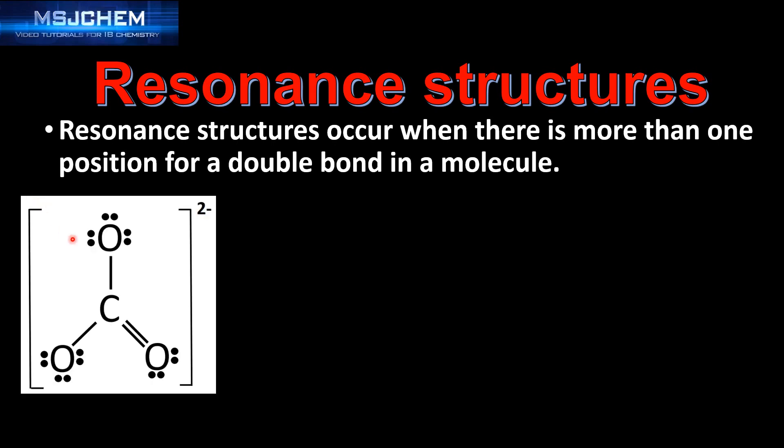Let's look at an example. Here we have the Lewis structure for the carbonate ion. The double bond between the carbon and oxygen atom is in this position here.